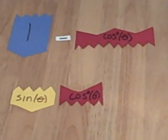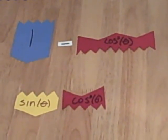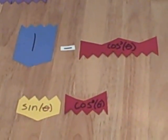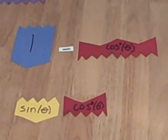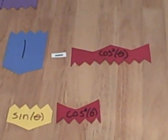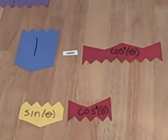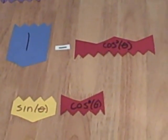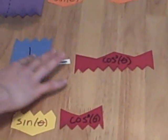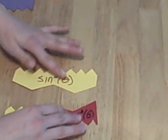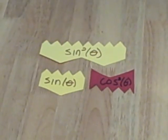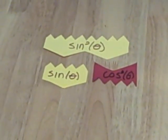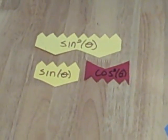Now we have one minus cosine squared over sine times cosine. One minus cosine squared — what does that make us think of? Our favorite trig identity is our Pythagorean identity, which says that sine squared plus cosine squared equals one. In other words, one minus cosine squared equals sine squared. We have a sine squared manipulative. Now we have sine squared over sine times cosine. I'm seeing sine in the numerator and sine in the denominator — there must be a way to simplify that.